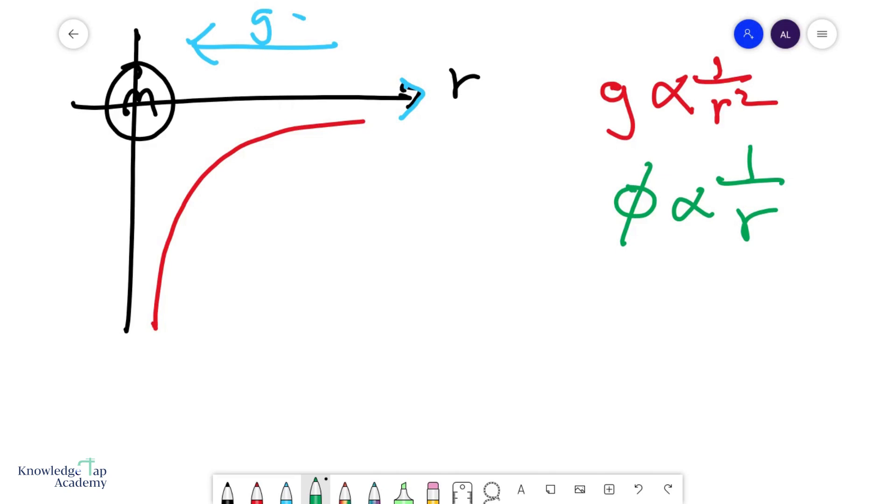And so our phi graph will look like a similar shape, but it will be always more negative than your g. And so this is how your g and your phi graph look like for a single mass.